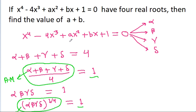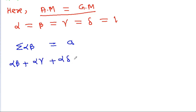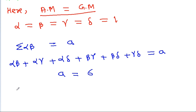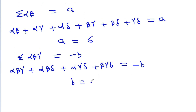Using Vieta's formulas: sigma(alpha·beta) = a, which expands to alpha·beta + alpha·gamma + alpha·delta + beta·gamma + beta·delta + gamma·delta = 6, so a = 6. And sigma(alpha·beta·gamma) = -b, giving b = -4.